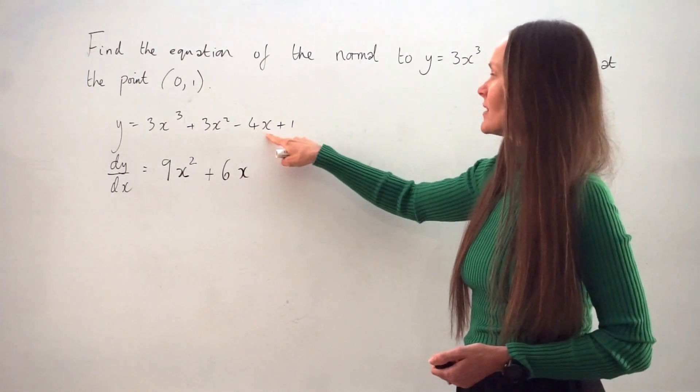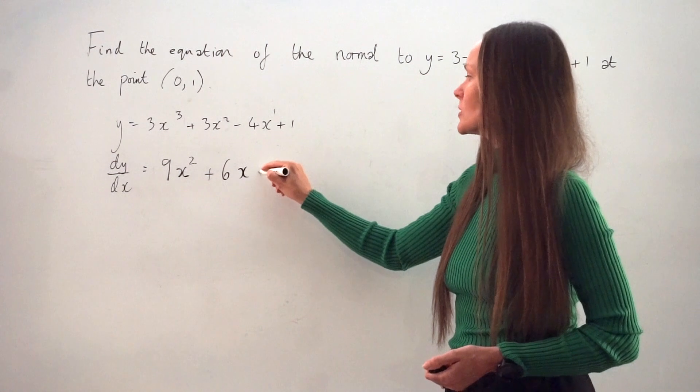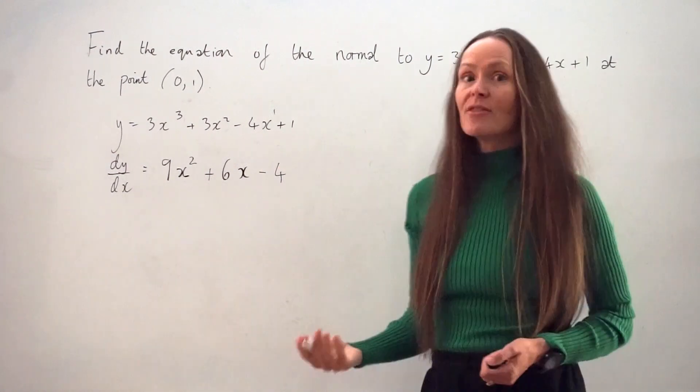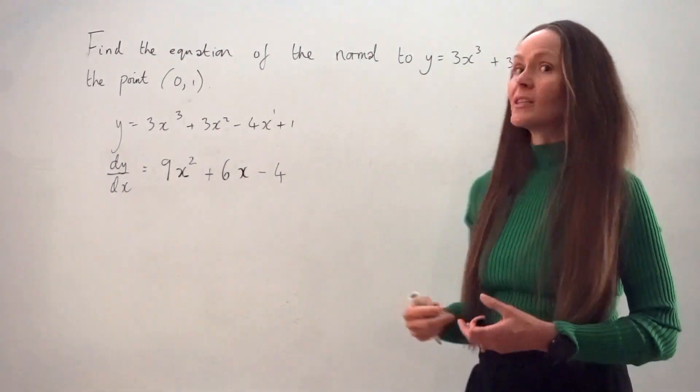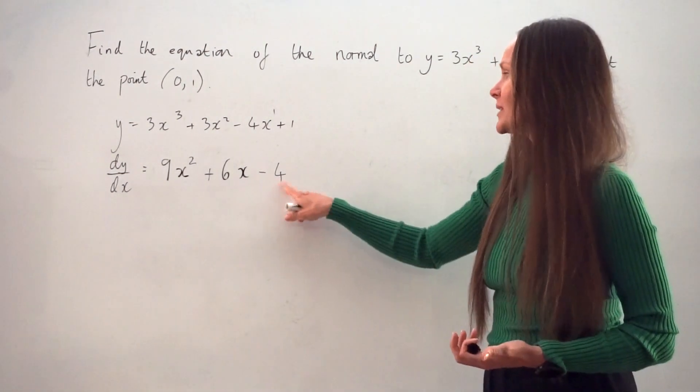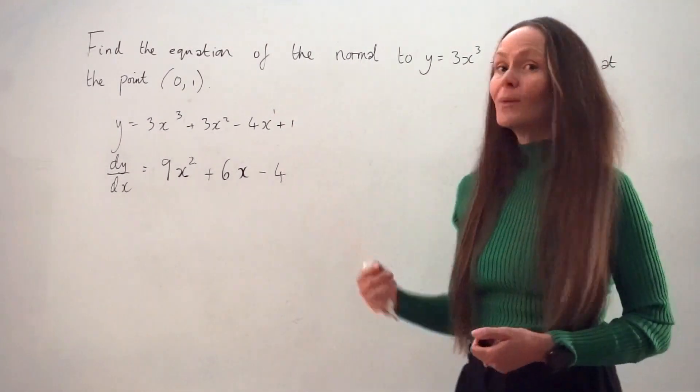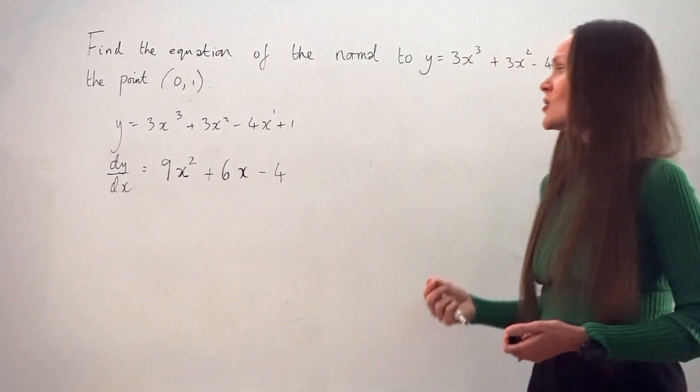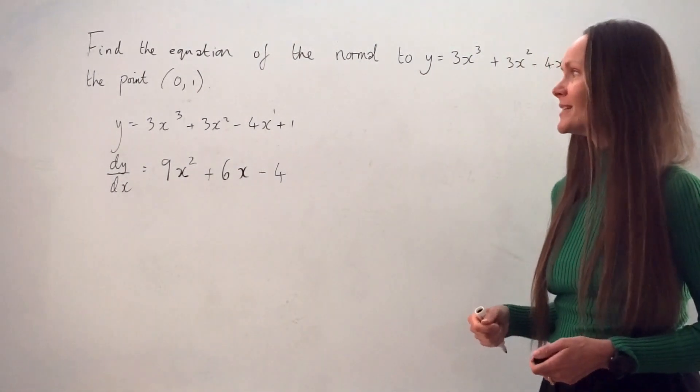And then if we differentiate this term, we have positive 1 multiplied by negative 4, which is negative 4. And again, the power decreases by 1, so x to the power of 0 is just equal to the number 1. And negative 4 times 1 is negative 4. And whenever you differentiate a constant, we're left with 0. So if you need more practice with differentiating, please do have a look at my other lesson where I go into a bit more detail.